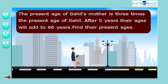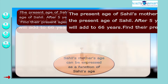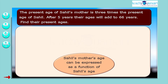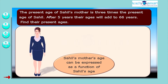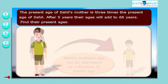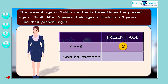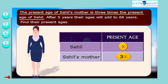Let's try to understand the question. Sahil's mother's age can be expressed as a function of Sahil's age. First, we take the present age of Sahil to be x years. So, the present age of Sahil's mother is 3x years.